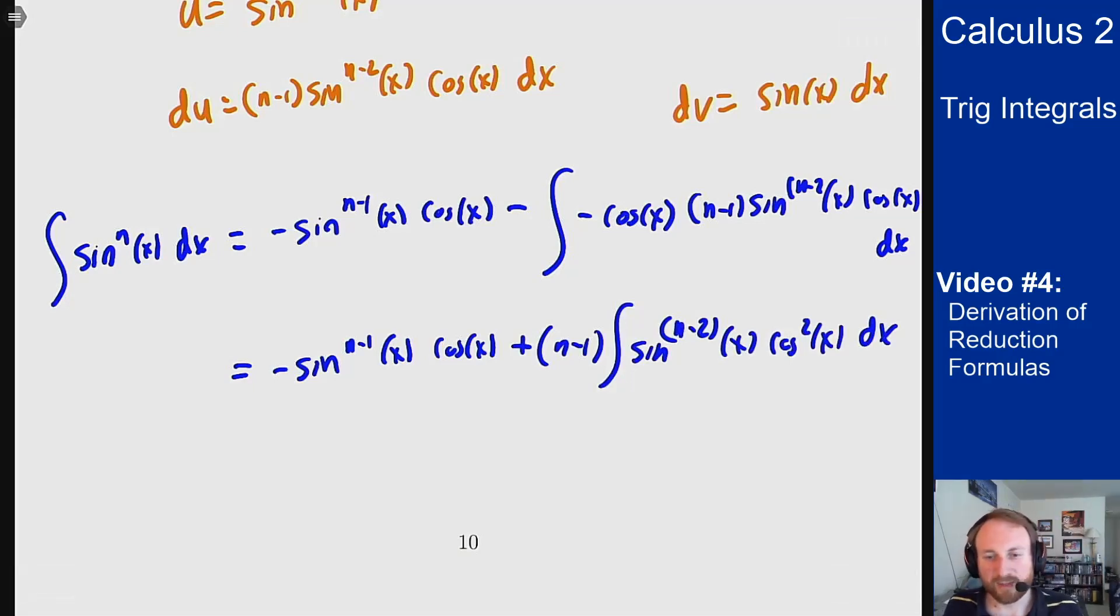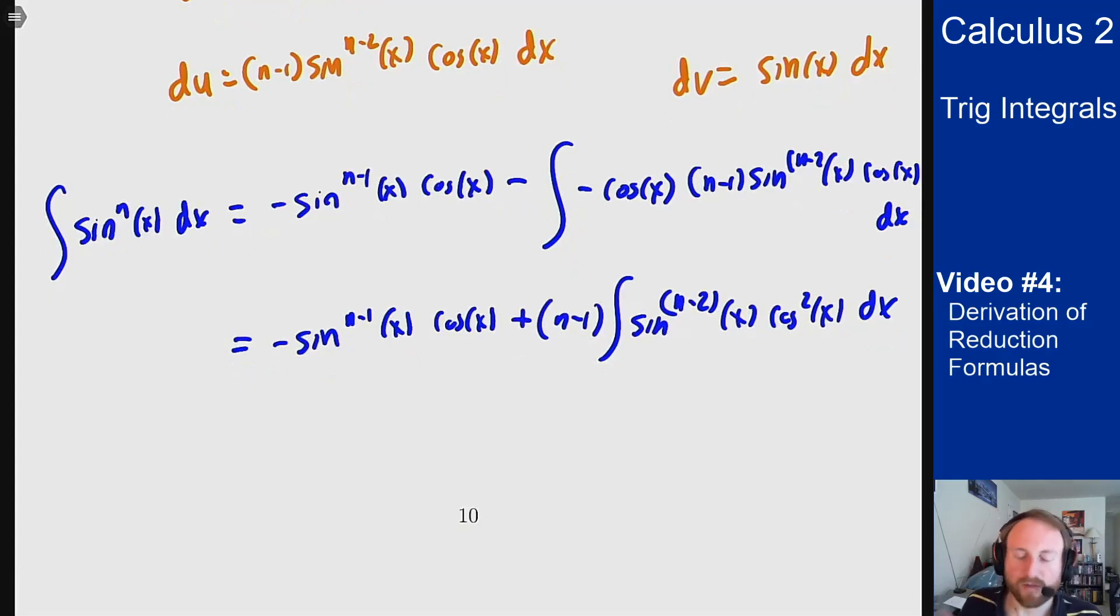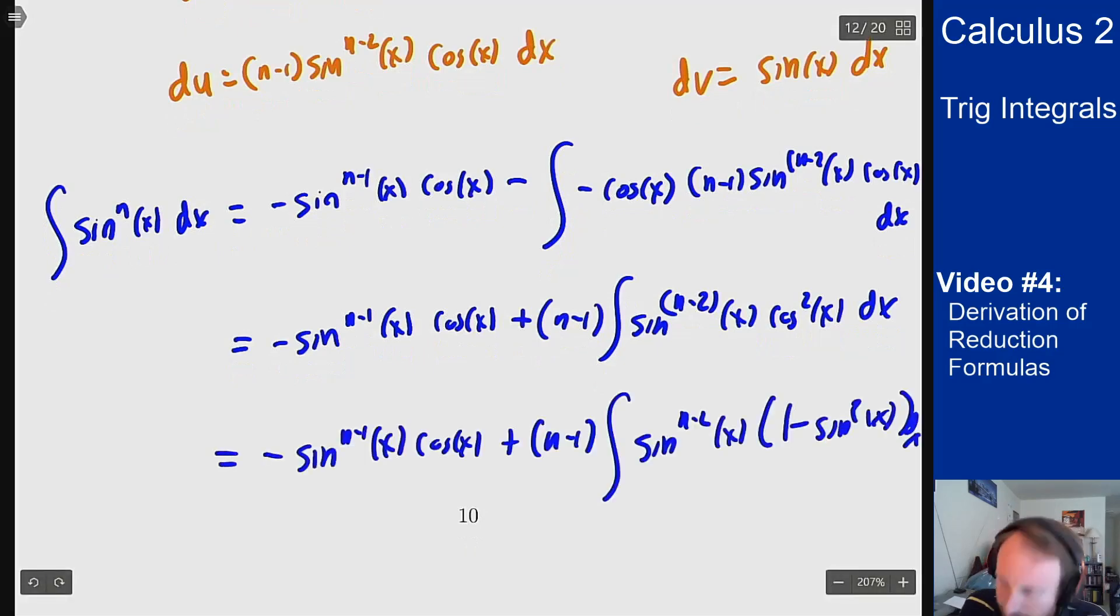And now to try to make this a little bit clearer what we're doing, I'm going to rewrite the cosine squared in terms of sine squared like we did for our Pythagorean identities before. This is why this process really only works for these trig functions that have this sort of relation between them.